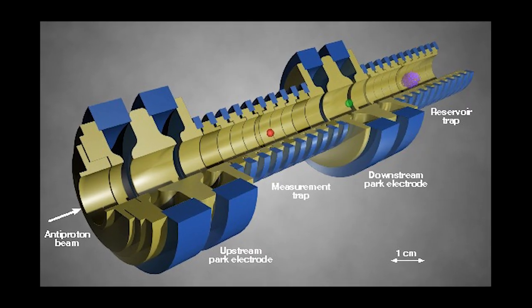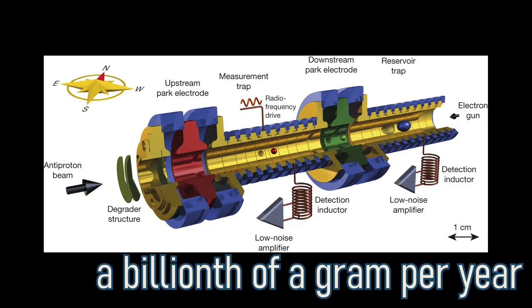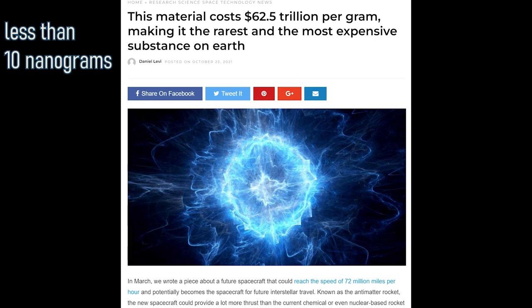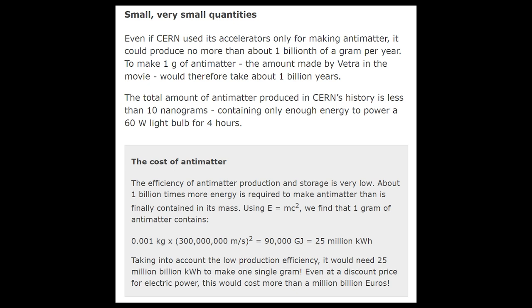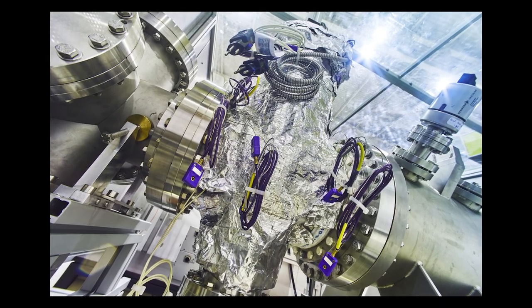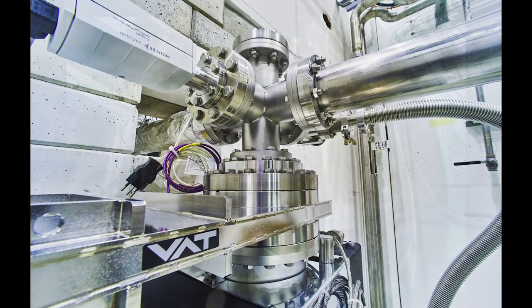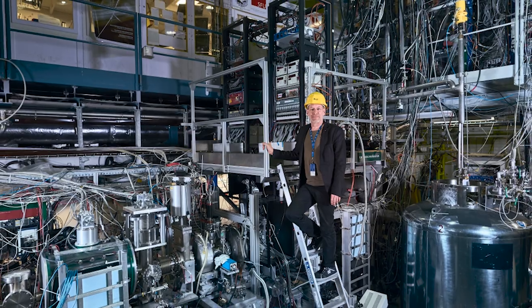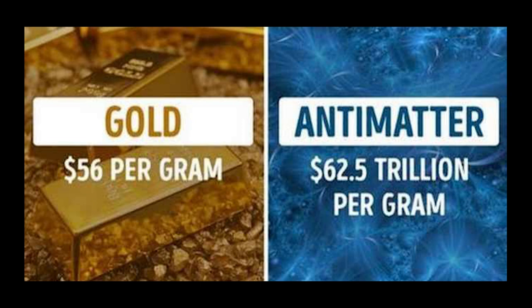Even if CERN used accelerators only for making antimatter, it could produce no more than about one billionth of a gram per year. To make one gram of antimatter would take about one billion years. The total amount of antimatter produced in CERN's history is less than 10 nanograms. The cost of antimatter is extremely high and the efficiency of antimatter production and storage is very low. About one billion times more energy is required to make antimatter than is contained in its mass. One gram of antimatter contains roughly 25 million kilowatt hours of energy, so taking into account low production efficiency, it would take 25 million billion kilowatt hours to make just one gram — costing more than a million billion dollars. So, essentially, infinite money.